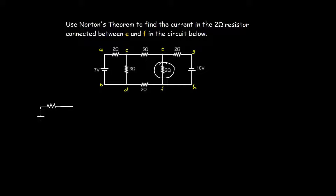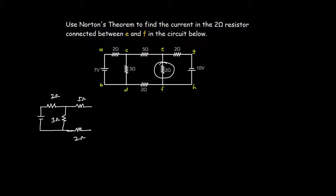So now I am considering just the seven-volt voltage source. I have two ohms here, three ohms here, five ohms here, two ohms here, the short-circuit path here, and then two ohms here. Since we are considering just the seven volts, we are going to short-circuit the ten-volt source.